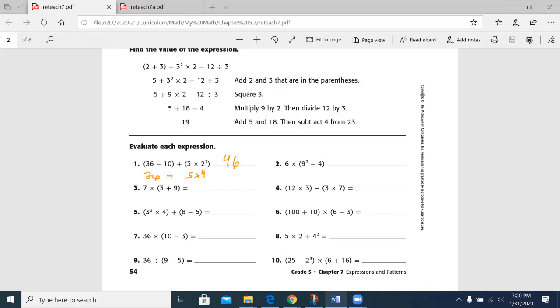Let's look at number 3. It goes 7 times 3 plus 9. Now, without this parentheses here, I'd have to do 7 times 3 first. But because it's parentheses, I now have 7 times 12, which is 84.